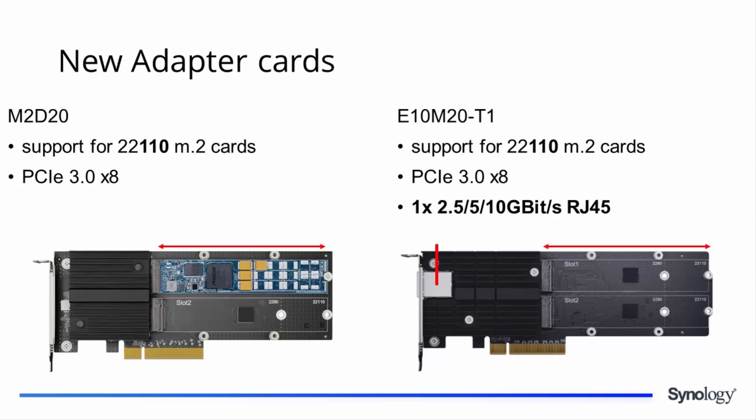The E10M20-T1 also supports multi-Gigabit 5GbE and 2.5GbE standards to enable cost-effective networking upgrades in home or office environments. Both of these cards have a form factor designed for 22110 M.2 cards — meaning they are longer and feature a PCIe 3.0 x8 host bus interface — but will also accommodate shorter NVMe cards.